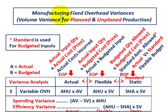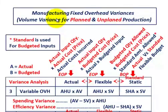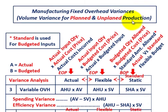What we're going to be going over here is the manufacturing fixed overhead variances, and we're going to be looking at the volume variance for planned and unplanned production.